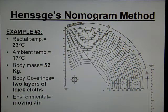The ambient temperature is 17 degrees Celsius. The victim's body mass is 52 kilograms. They were found to have two layers of thick clothing and the air was moving outdoors.